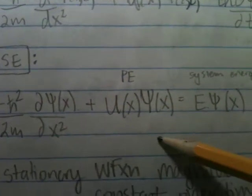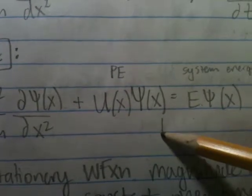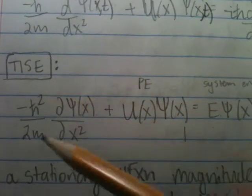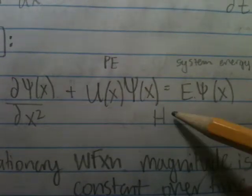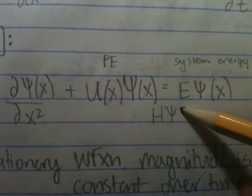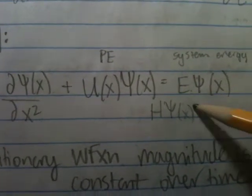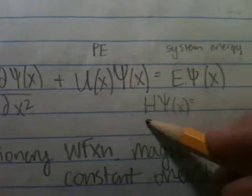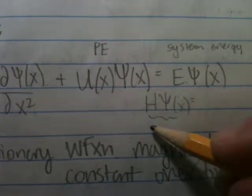When you have the Hamiltonian, this is the Hamiltonian, being applied to psi of x, this is the eigenfunction.